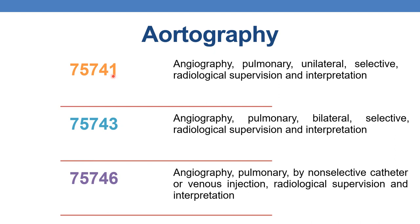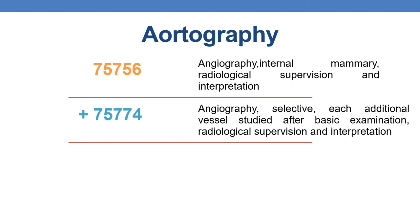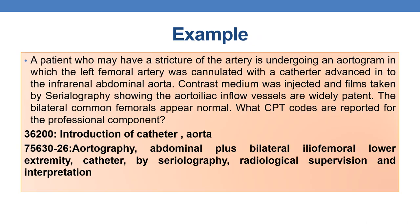Next, 75741 — angiography, pulmonary, unilateral. Next, 75743 — angiography, pulmonary, bilateral. Next, 75746 — angiography, pulmonary, non-selective catheter or venous injection, radiological supervision and interpretation. Next, 75756 — angiography, internal mammary, radiological supervision and interpretation. And finally, add-on code +75774 — angiography, selective, each additional vessel studied after basic examination, radiological supervision and interpretation. This is an add-on code and should not be reported separately.